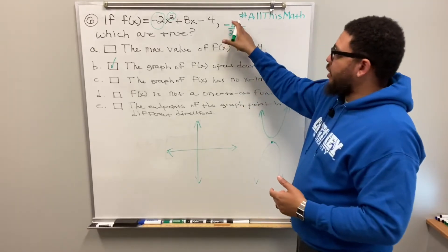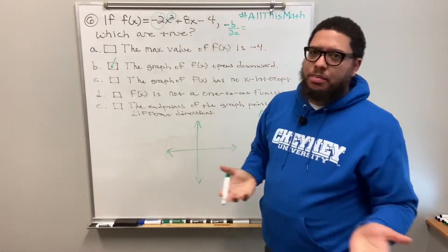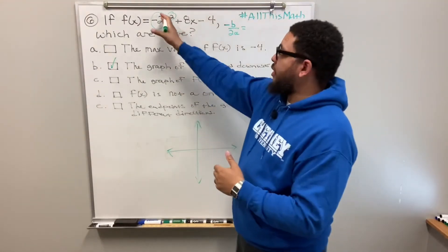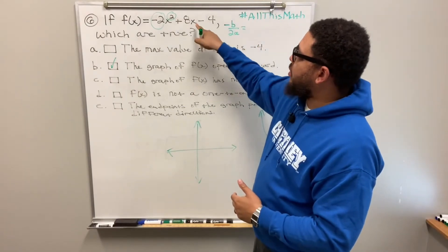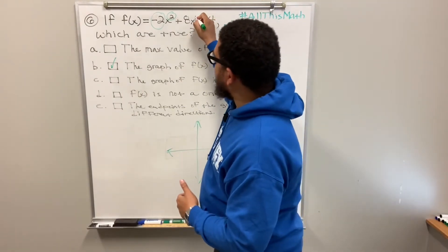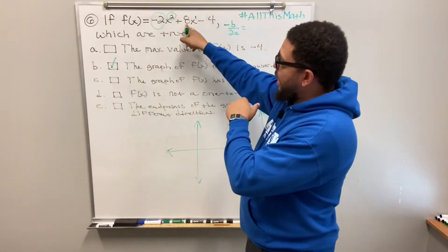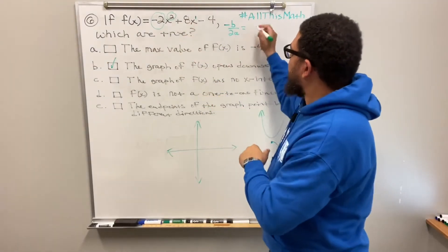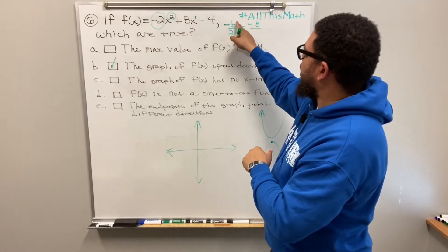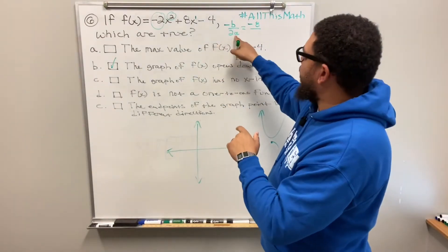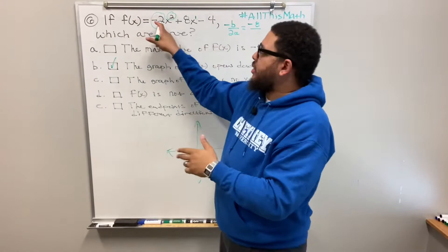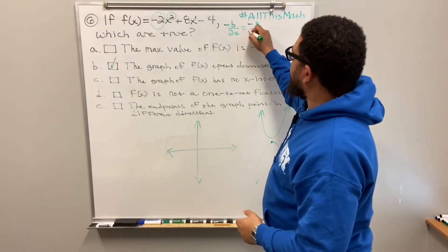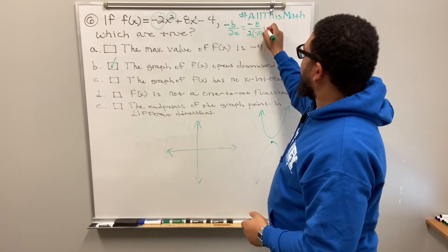You might be wondering: where is the b and where is the a? They represent specific numbers in the equation. The b is the coefficient of the linear term — the number next to x to the first power — so in this case b is eight. The a is the number connected to the x-squared term, which determines whether the graph opens up or down — so a is negative two.